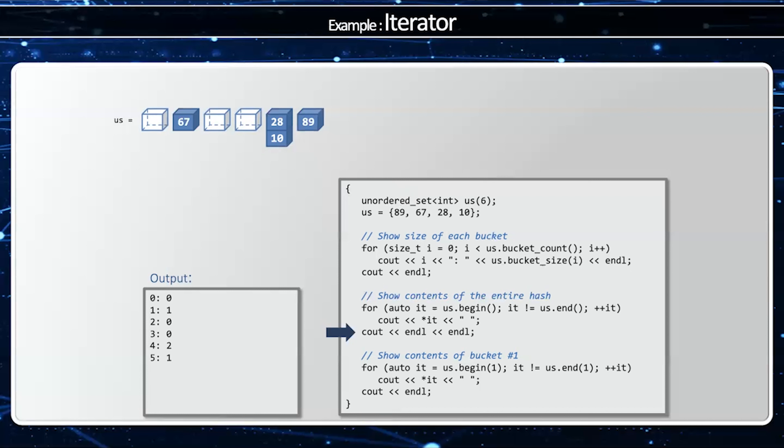There's nothing there. Then go to bucket 1, 67. Then bucket 2 and 3 which are empty. Then bucket 4 which is 28 and then 10. And then finally bucket 5 which is 89. I'm going to show the contents of bucket 1 that only has a single value 67.